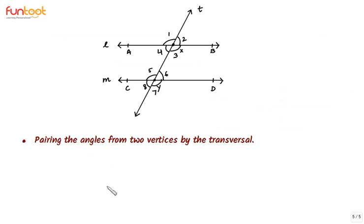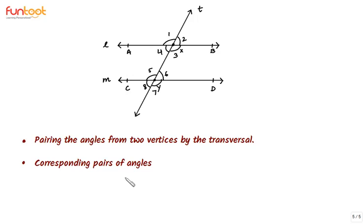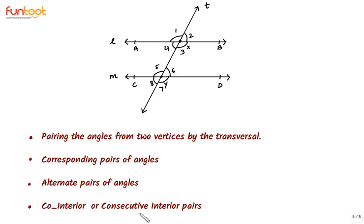Let's summarize what we did in this video. We paired the angles from two vertices formed by the transversal. We identified corresponding pairs of angles as angles in matching corners. We learned about alternate pairs of angles as angles on different sides of the transversal — alternate interior and alternate exterior. And we learned about co-interior or consecutive interior pairs, which are interior angles lying next to each other.